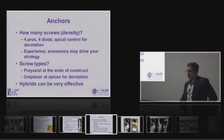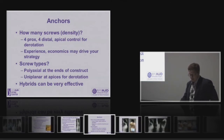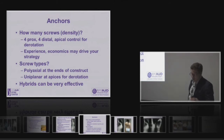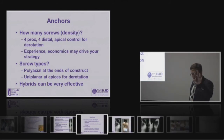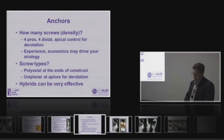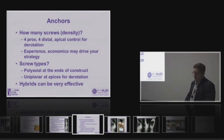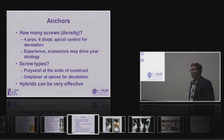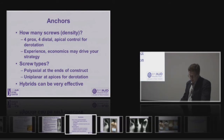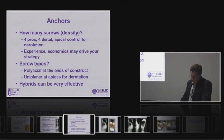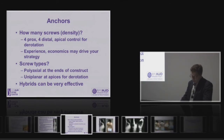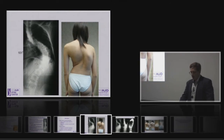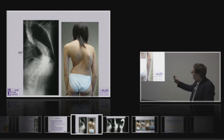Hopefully Jim and his group will give us answers to that soon so we can use it clinically. In terms of the anchors — the workhorses for getting the job done — how many screws to use, what should the anchor density be? At a minimum, I think four above, four below, and put screws at the apex to get apical control for derotation. Screw strategies are based on your experience and the economics as well. The polyaxial screws I typically use at the ends of constructs, and uniplanar screws for more rigid control of the apex. Hybrid constructs do a really nice job, particularly for these widely deviated apices.